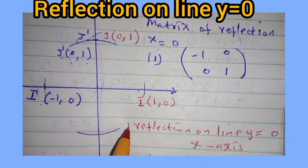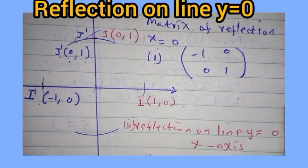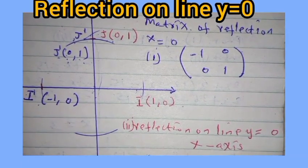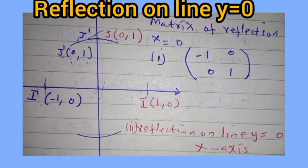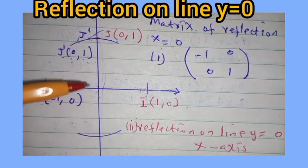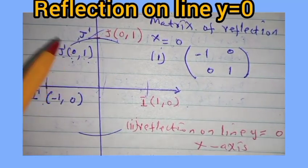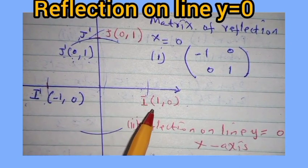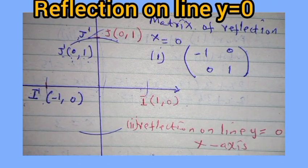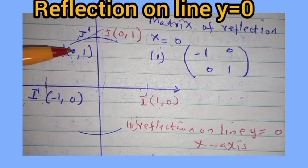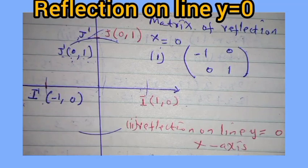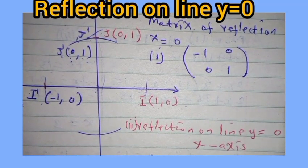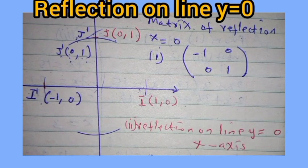We want to find our standard matrix — this is number 2 using this diagram here. To do that, it is very simple. We consider this unit matrix. Here we have i along the x-axis: 1, 0 — this matrix — and j: 0, 1. So the image — we start with that of i, or we can even start with that of j.